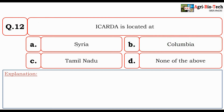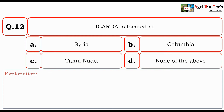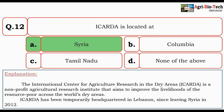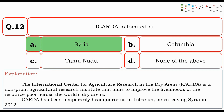Next question: ICARDA is located at — Syria, Colombia, Tamil Nadu, or none of the above? The correct option is Syria. The International Center for Agricultural Research in the Dry Areas is a non-profit agricultural research institute that aims to improve the livelihoods of resource-poor people across the world's dry areas. It has been temporarily headquartered in Lebanon since leaving Syria in 2012.